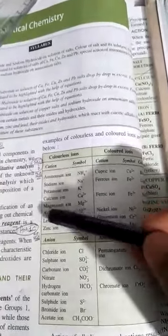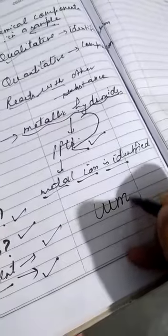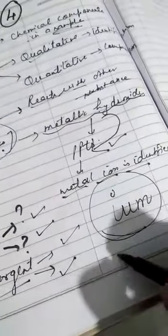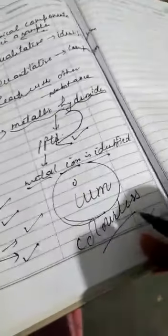One generalization I would like to tell you: ammonium, sodium, potassium, calcium, magnesium, aluminum - these are the cations ending with I-U-M. Most of these are ending with I-U-M, so those with I-U-M suffix are usually colorless.